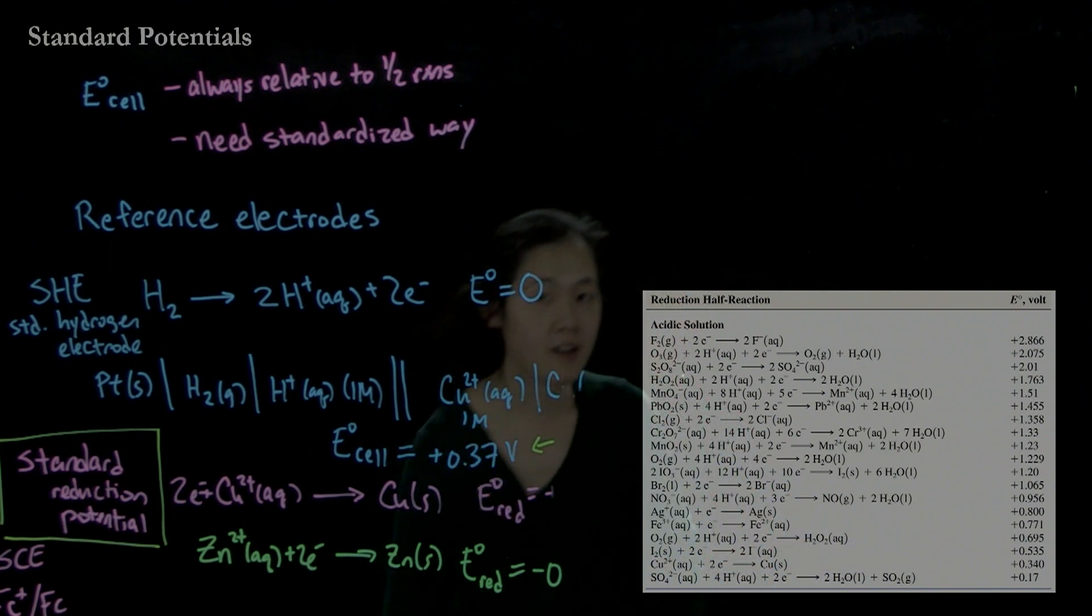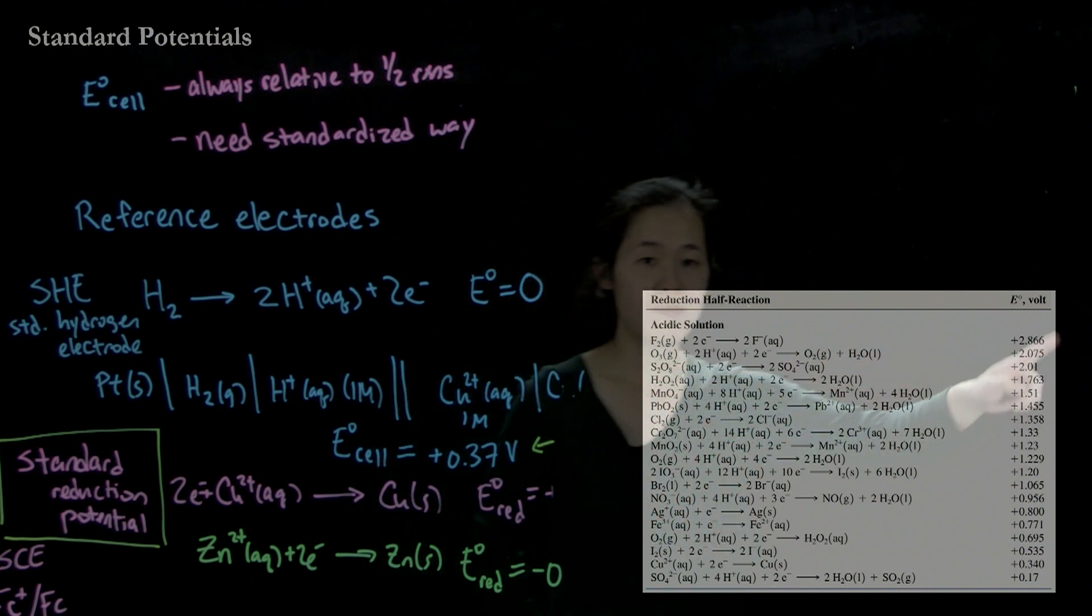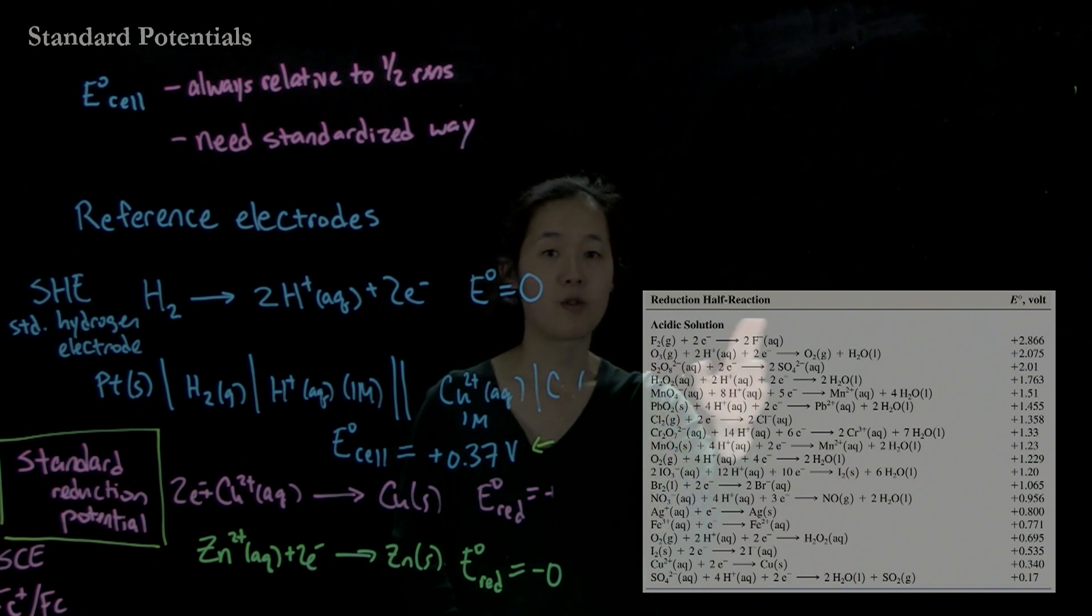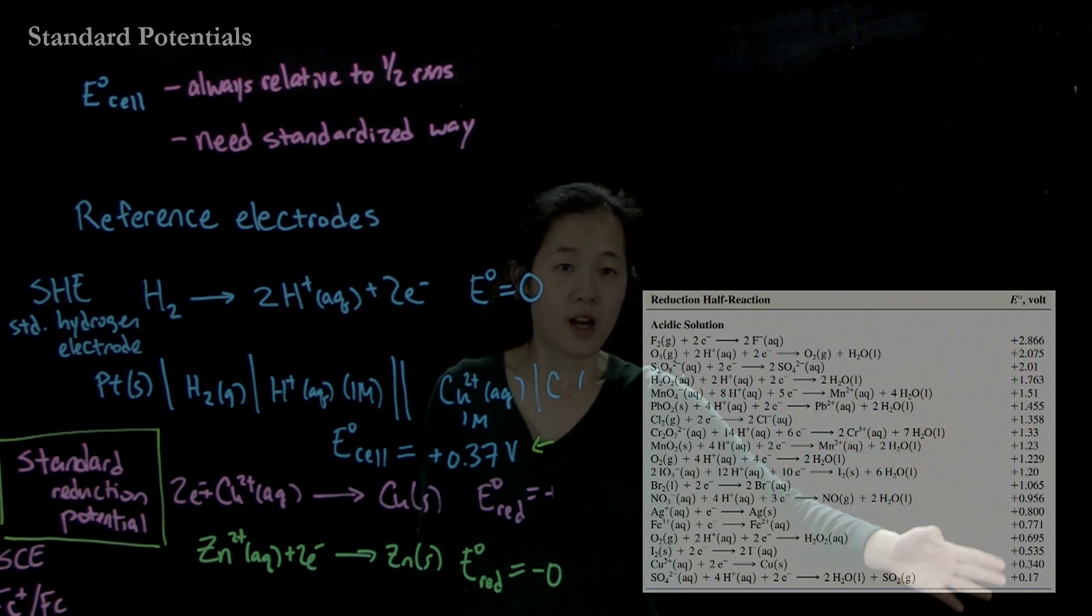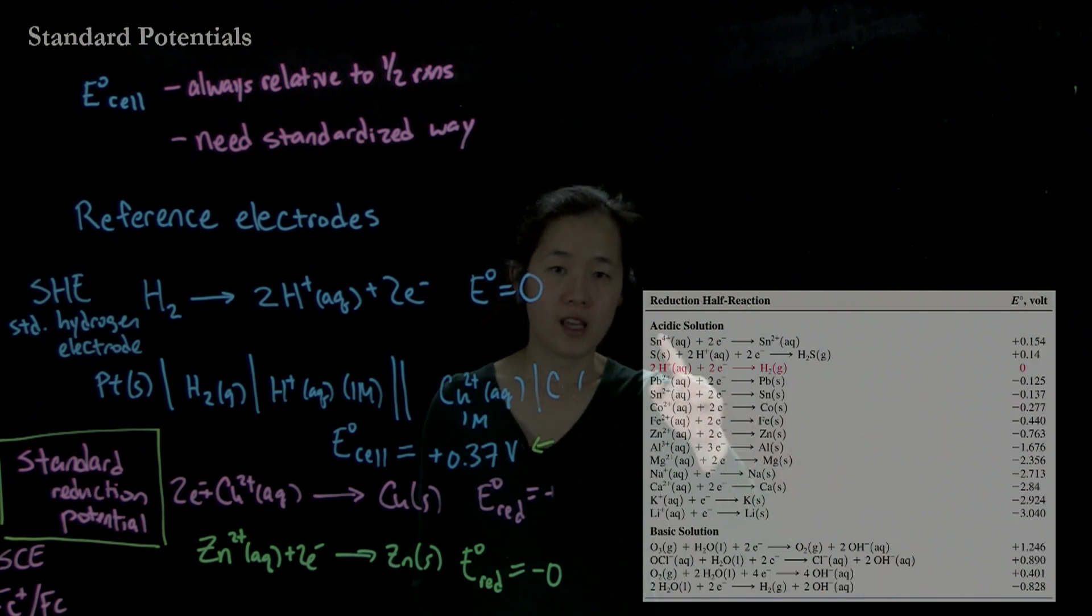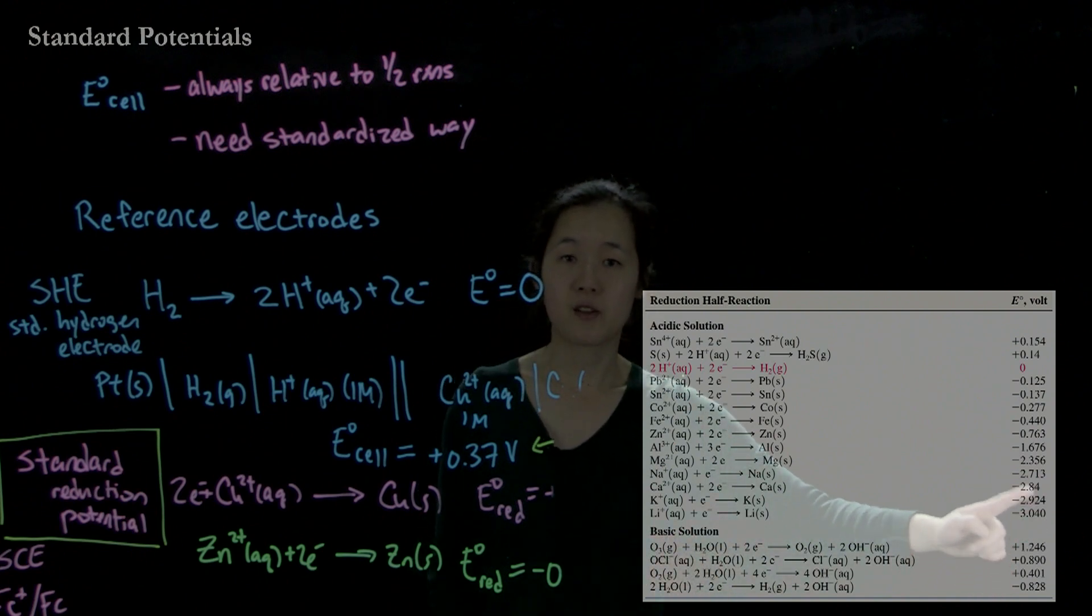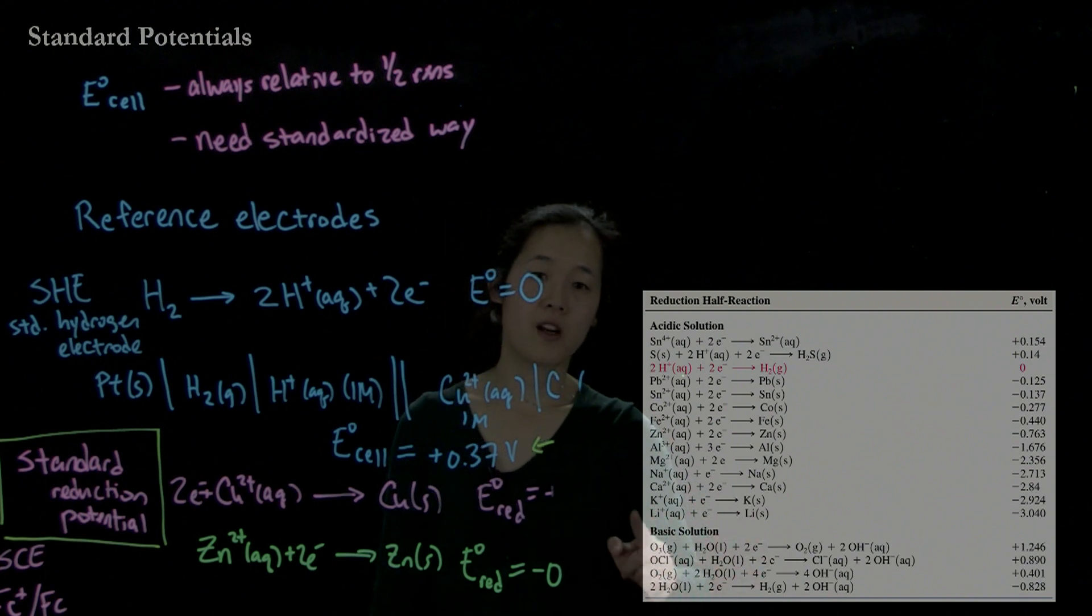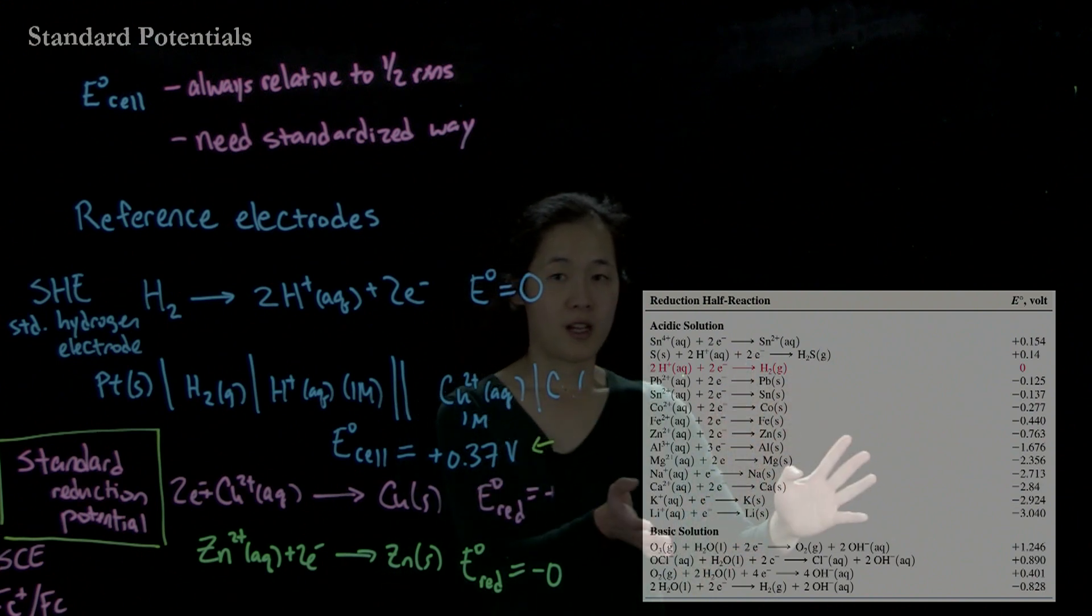So here's a table of reduction half-reactions. By convention, we always report this potential as a reduction potential. So you're always going from the more oxidized compound to the more reduced compound. So you have a table where we can go from very, very oxidizing all the way down, and then as we go further down, you can see that we can get towards the alkaline metals where they're very reducing because that potential is very negative. But again, we're still reporting this reduction potential even though it's very unfavorable. So that is our table of reduction potentials.